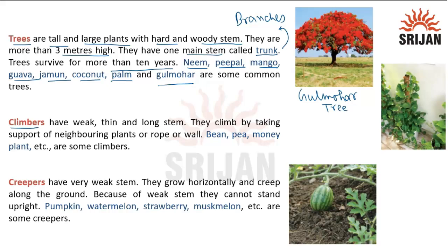Climbers have weak, thin, and long stems. They climb by taking support of neighboring plants — this is most important — or a rope or wall. Bean, pea, money plant, etc. are some climbers. This is a climber.